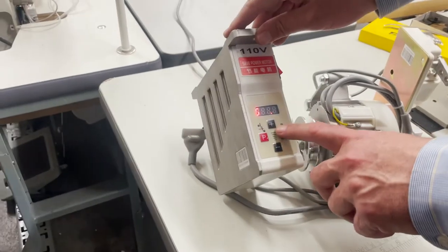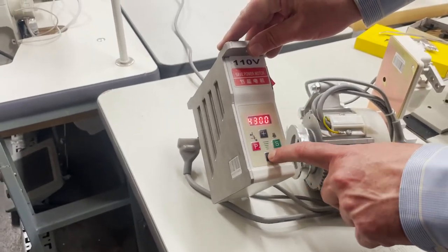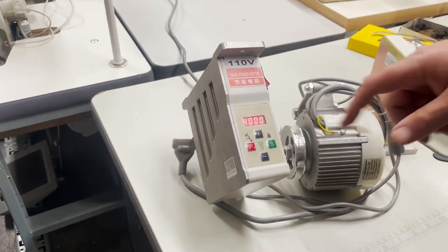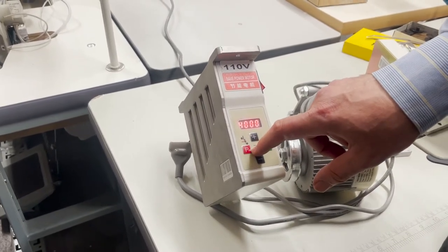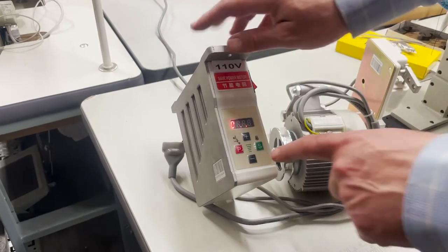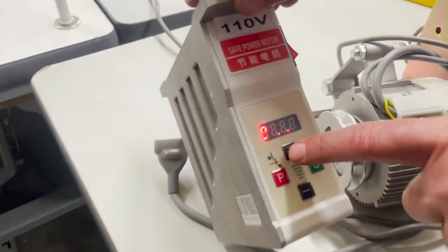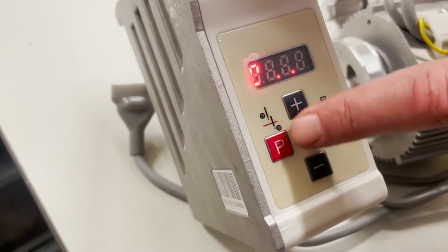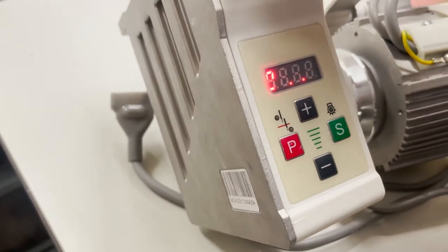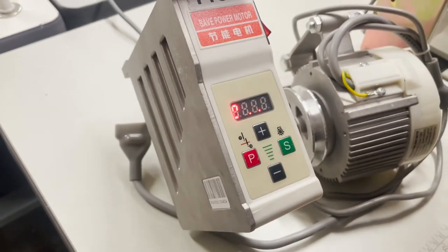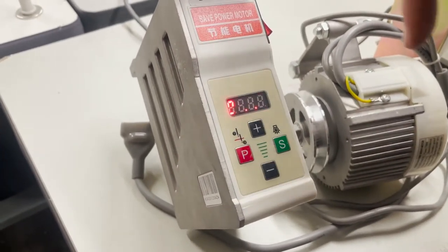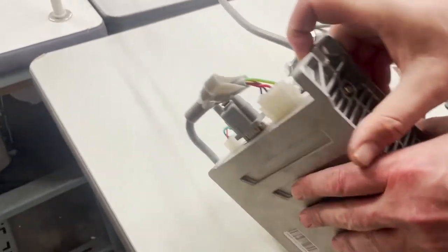Now this is speed up and speed down. A lot of people just touch this P button. P is needle position. You see this needle? There's a red line showing needle up and down. This is a needle positioning button, meaning you want the needle to stay up or stay down.